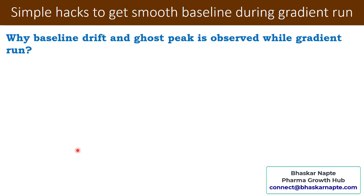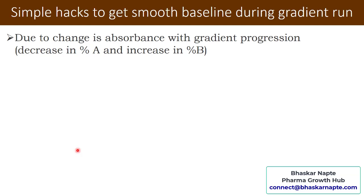This drift and ghost peaks may also be observed in isocratic mode, but they are more prominent when shifting from isocratic to gradient. The first reason I would like to explain is due to the change in absorbance with gradient progression — baseline drift occurs because of changing absorbance as the gradient progresses.